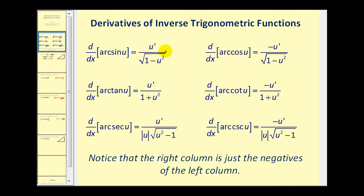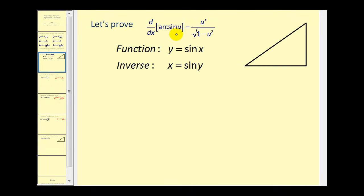Let's see if we can derive at least one of these before we do some examples. Remember that the arc sine function is the inverse of the sine function. If we start with y equals sine x and want to find the inverse function, the procedure is to interchange x and y variables and then solve for y. So here we have the inverse sine function where y is the angle and x is the sine function value.